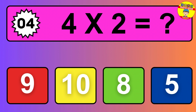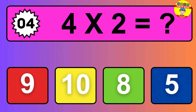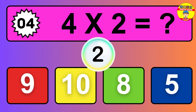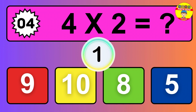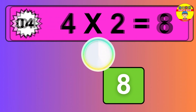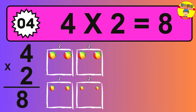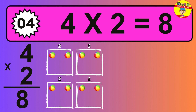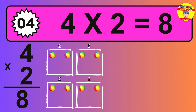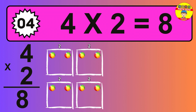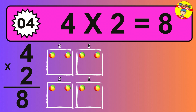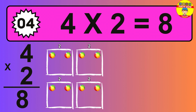Question four. Four times two equals what? So the answer is four times two is eight. To calculate, we have four groups with two balls each one. So how many balls do we have? Eight balls.